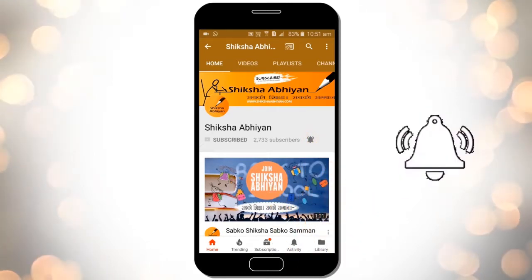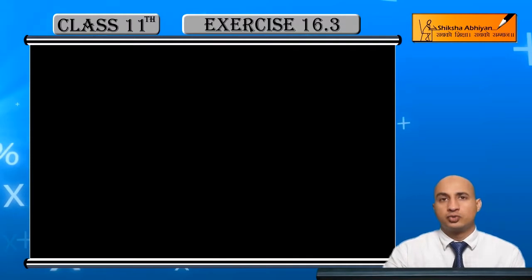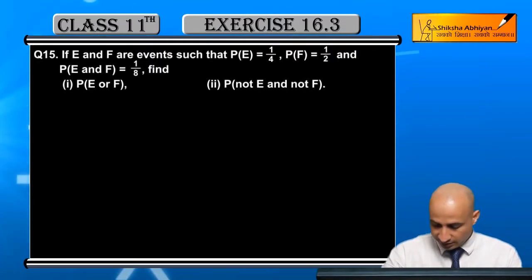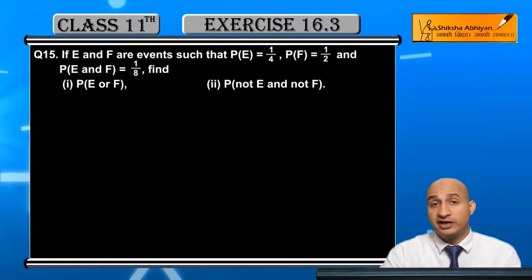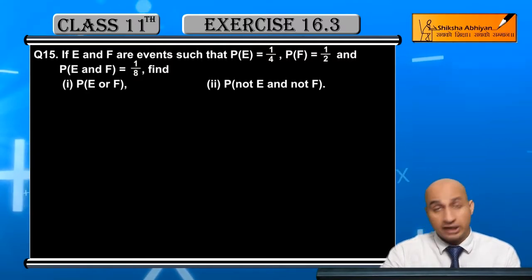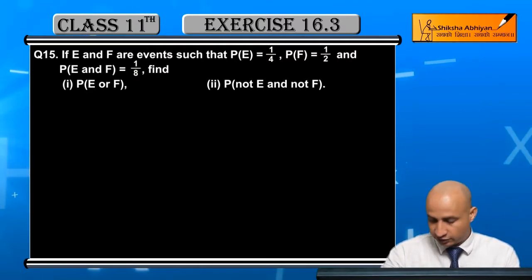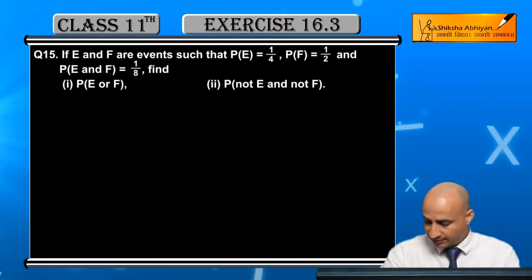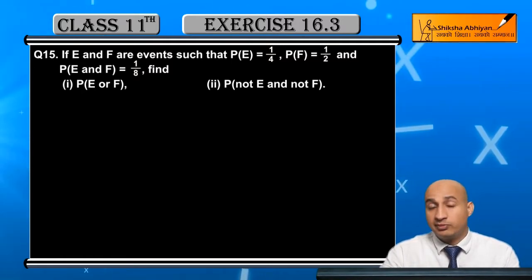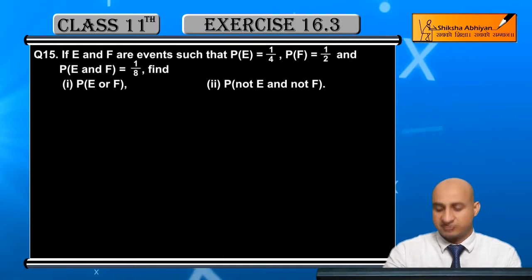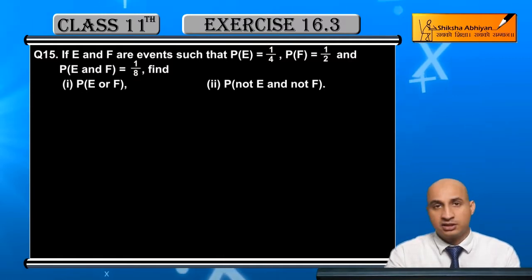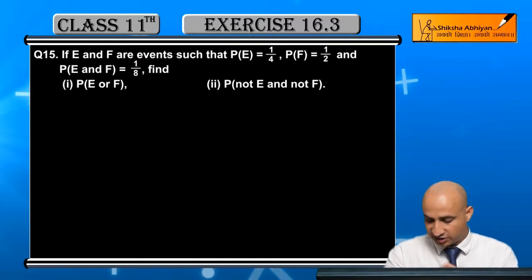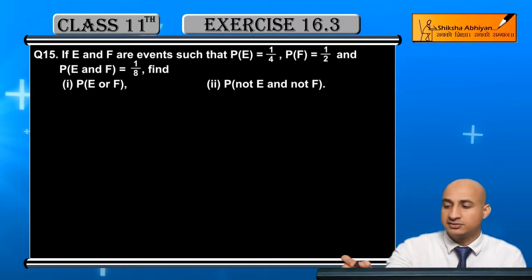Question 15: If E and F are events such that P(E) = 1/4, P(F) = 1/2, and P(E intersection F) = 1/8, then find — first case: P(E or F), and second case: P(not E and not F).